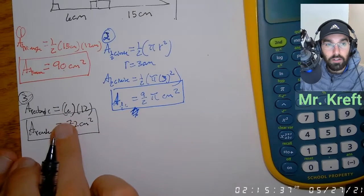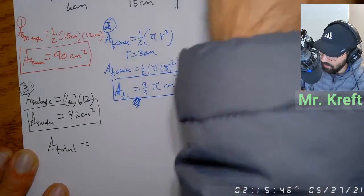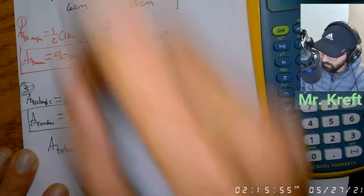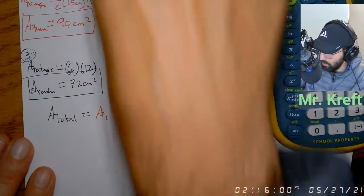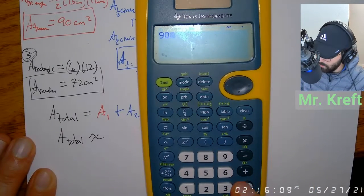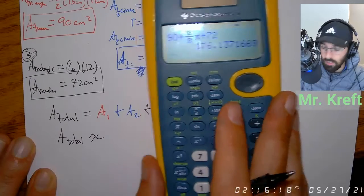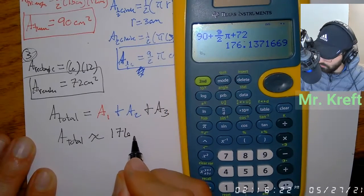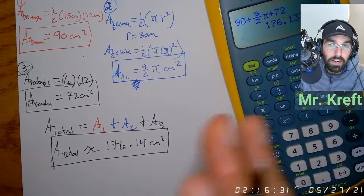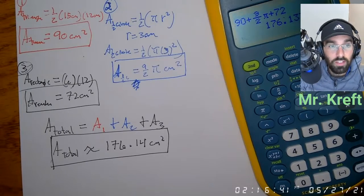So I found the area of the triangle, the rectangle, and the semicircle. To find the total area, I add all three together: 90 plus nine-halves pi plus 72. That gives me a total area of approximately 176.14 centimeters squared. All areas are squared because it's a length times a length — centimeters times centimeters equals centimeters squared.